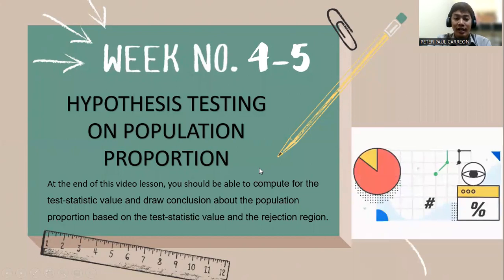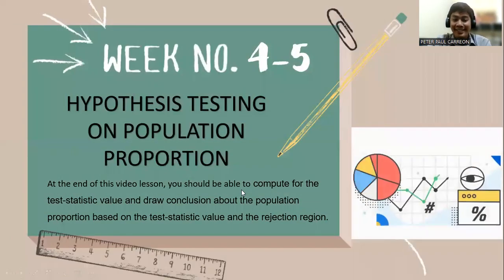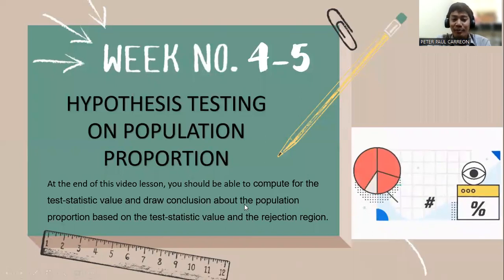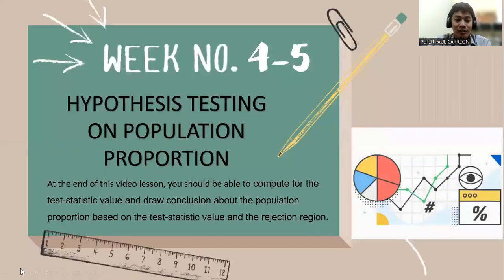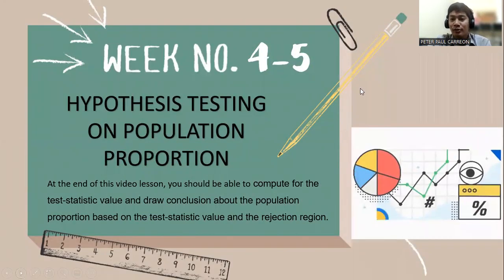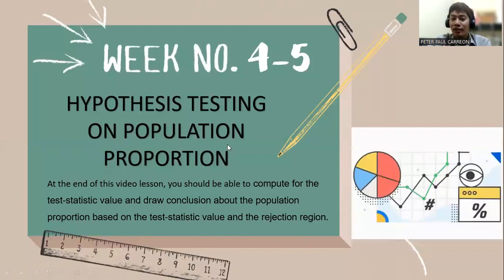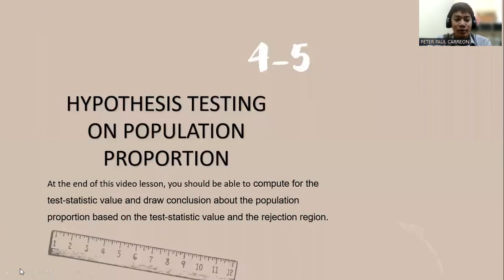At the end of this video lesson, you should be able to compute for the test statistic value and draw conclusions about the population proportion based on the test statistic value and the rejection region. This is where you will decide whether to reject or fail to reject the null hypothesis concerning the population proportion.